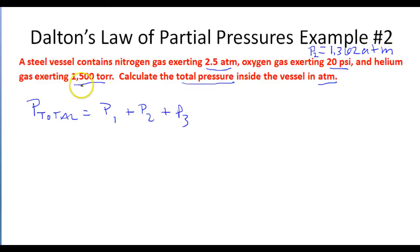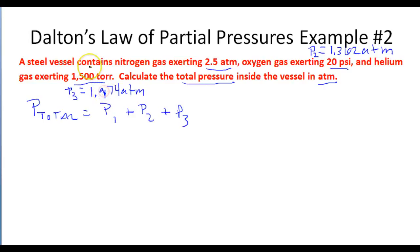Now we convert the third pressure from torr to atmospheres. To convert torr to atmospheres, we divide by 760. So 1,500 torr divided by 760 gives us 1.974 atmospheres.